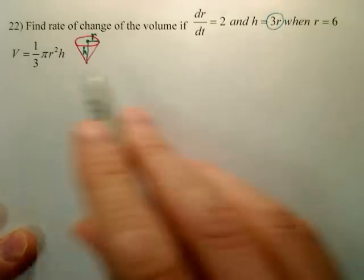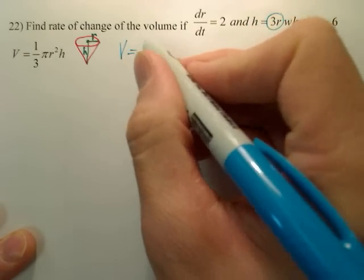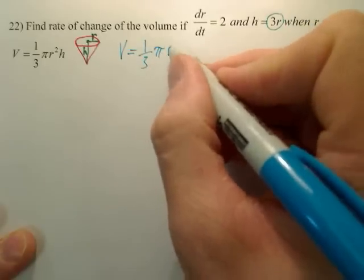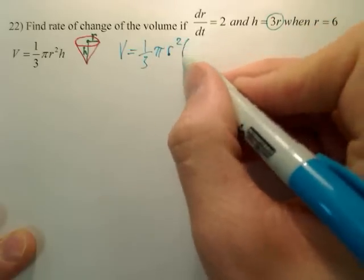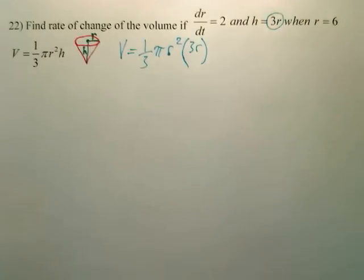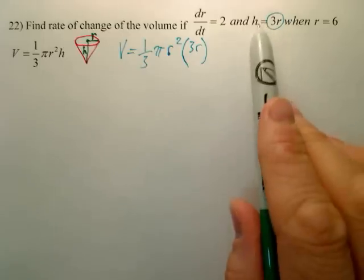That is h. So I'm going to go to this function right here and rewrite it as one-third pi r squared, and instead of h, I'm going to replace with 3r.